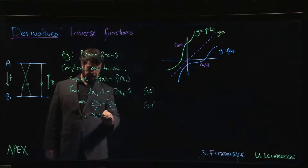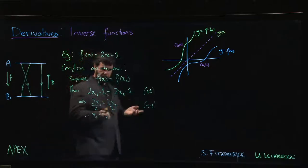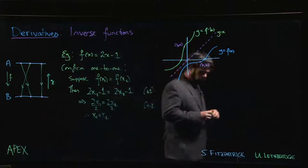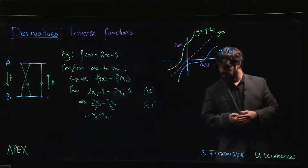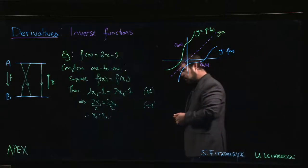So we get x1 equals x2. We've confirmed what we sort of already knew, which is that this is a one-to-one function. How do we find the inverse?